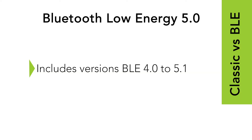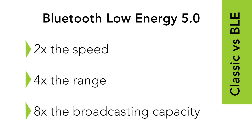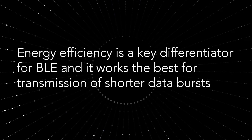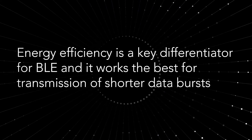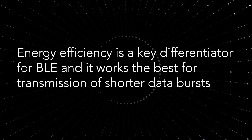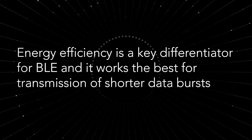BLE, or Low Energy Bluetooth, is the second-generation Bluetooth and includes versions 4.0 to 5.1. BLE 5 offers two times the speed, four times the range, and eight times the broadcasting capacity than previous BLE versions. Energy efficiency is a key differentiator for BLE, and it works best for transmission of shorter data bursts.